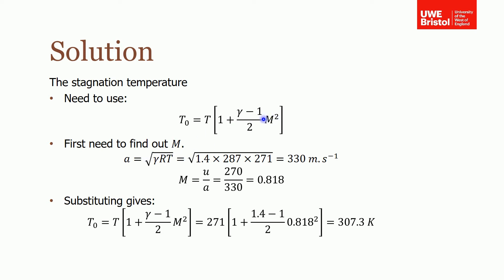To work out M, we were told the velocity, so we first need to find the sonic velocity. We know that A equals the square root of gamma RT. From the steam tables, gamma is 1.4, the gas constant is 287, times the temperature.